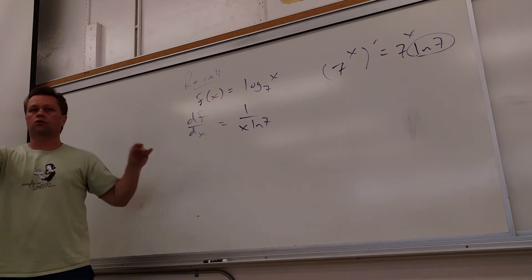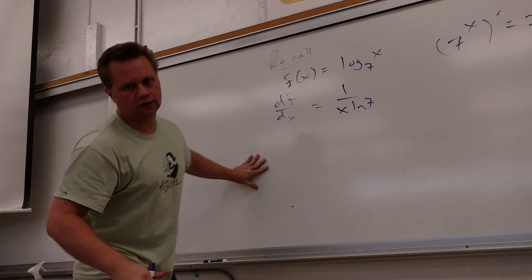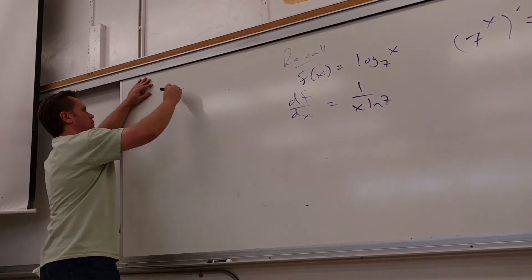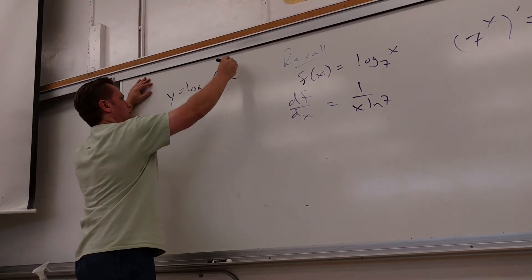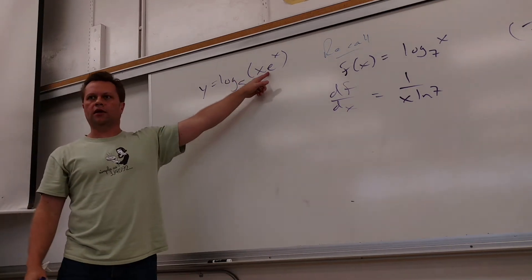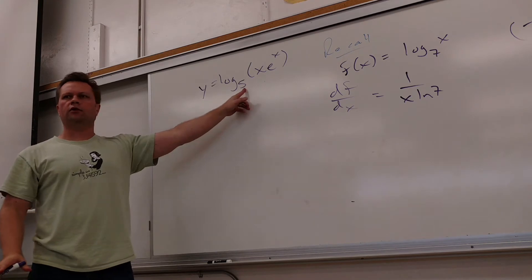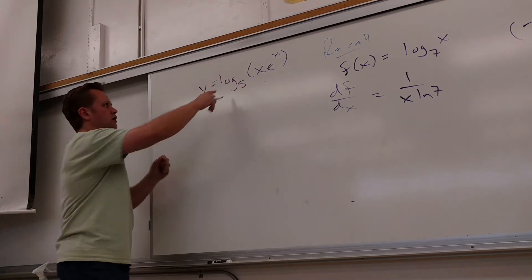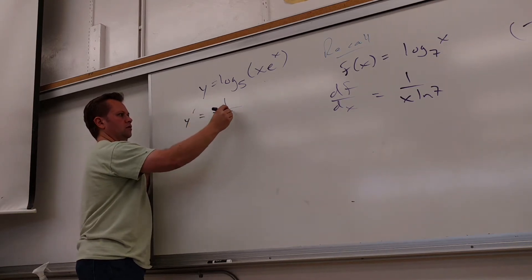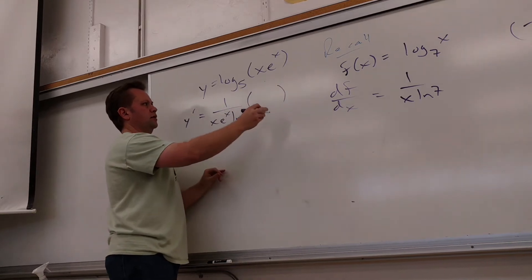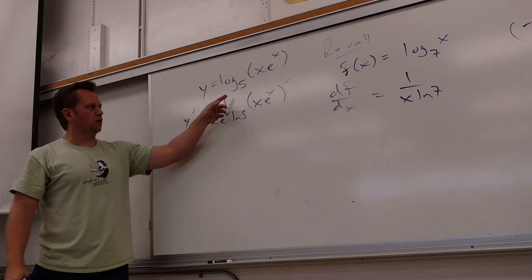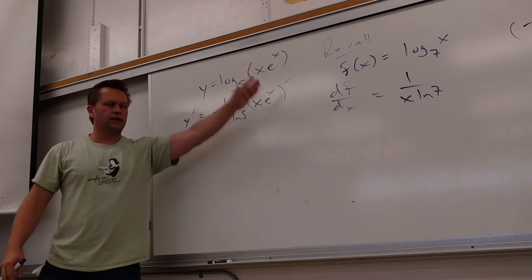Alright, how are we doing so far? The question is this: take the derivative of log base 5 of (x · eˣ). We're human — there's a big mess in there. But we force ourselves to realize all we've got to worry about is the outside function, right? So what's the derivative of log base 5 of n? It's 1 over that stuff, with an Ln5 on the bottom. And then you multiply by the derivative of the inside. Log base 5 of anything would be 1 over that thing · Ln5, then the inside gets a turn.